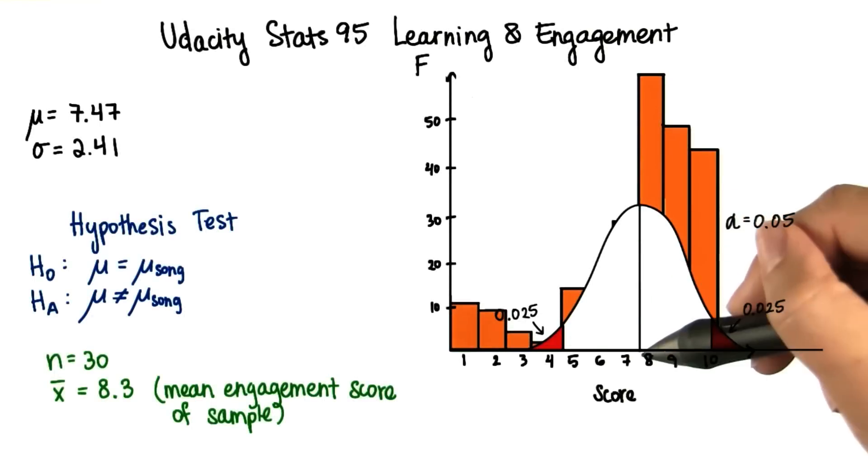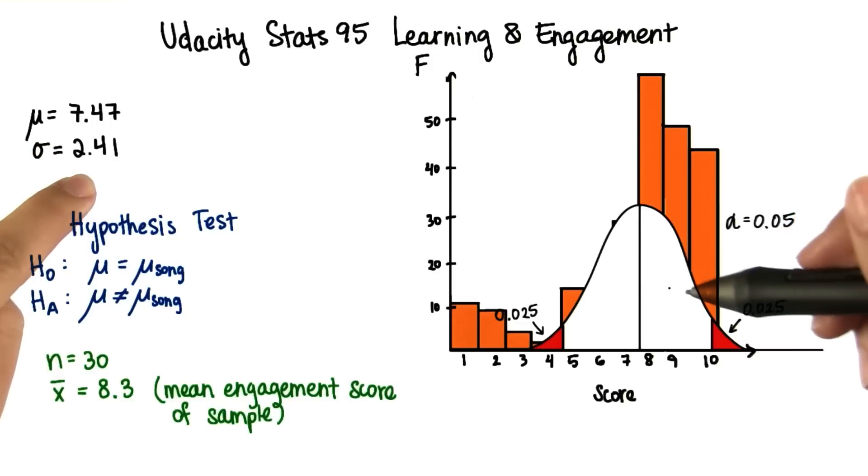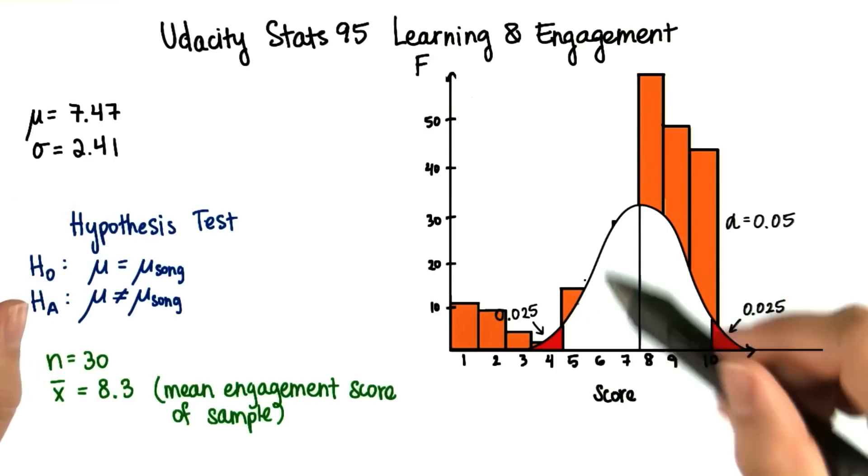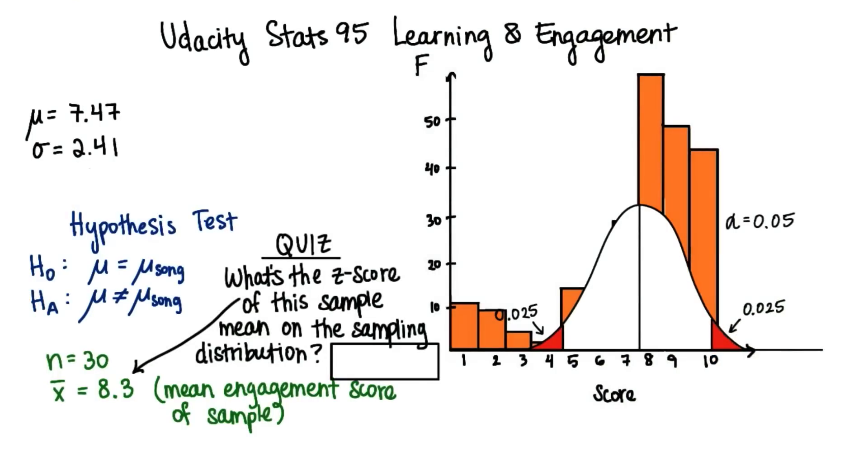Remember that the mean of sample means should be the same as the population mean, and the standard deviation should be the population standard deviation divided by the square root of n. We want to find where on this distribution this sample mean will fall. In other words, what's the z score?